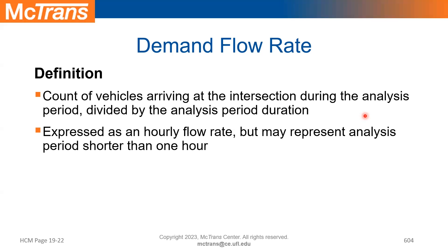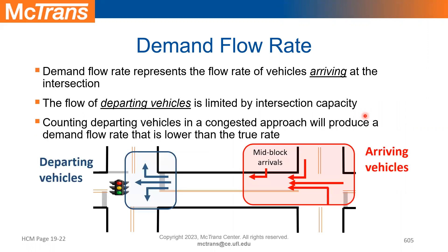Basically, demand flow rate is the input for HCM, and it represents the number of vehicles that want to get served — maybe they get served, maybe not; it depends on capacity. What we want to know is that demand is the number of vehicles that want to get served, and those that do get served we call volume served.